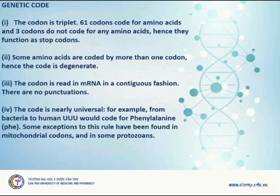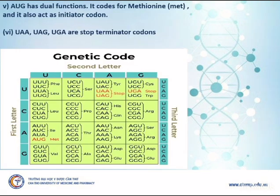For example, from bacteria to humans, UUU codes for phenylalanine. Some exceptions to this rule have been found in mitochondrial codons and in some protozoans. AUG has dual functions: it codes for methionine and also acts as the initiator codon. UAA, UAG, and UGA are stop or terminating codons.